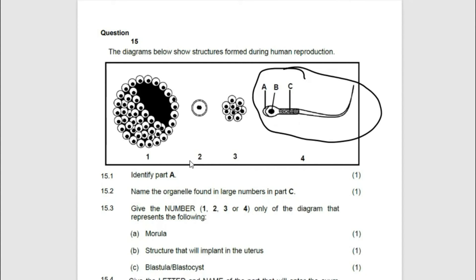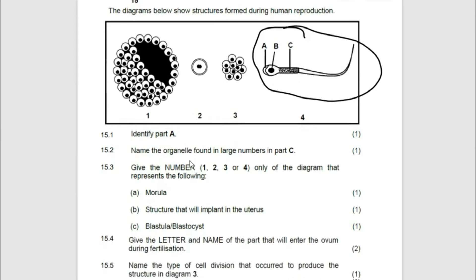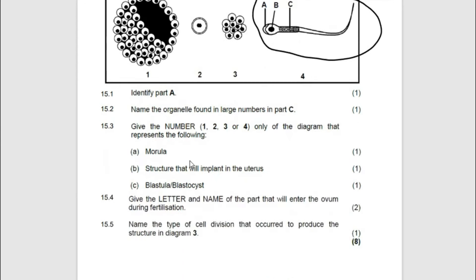We have seen it — the organelle found in large numbers in part C. We have seen them: it is mitochondria. They are saying give the numbers one, two, three, four only on the diagram.